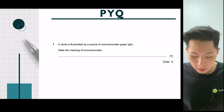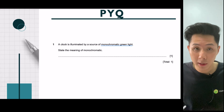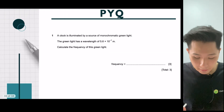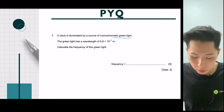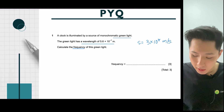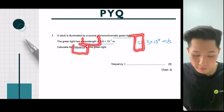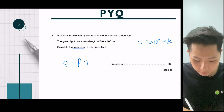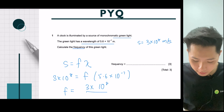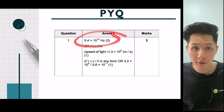The third question asks for the meaning of monochromatic green light — from the last chapter, it means a single frequency, like a laser light with only one color. The last question: a clock is illuminated by monochromatic green light with a given wavelength, and we need to calculate the frequency. We know light travels at 3 × 10⁸ m/s. Using S = fλ, rearranging gives f = S ÷ λ = (3 × 10⁸) ÷ (5.6 × 10⁻⁷), which gives the calculated frequency answer when entered into a calculator.